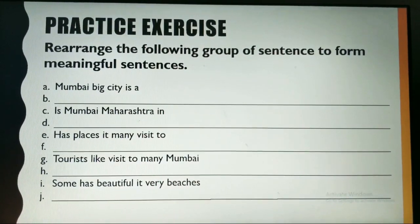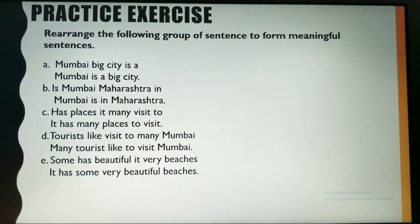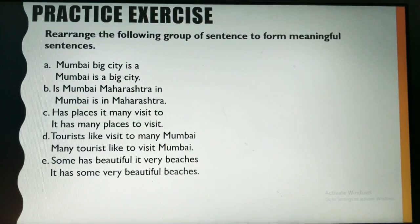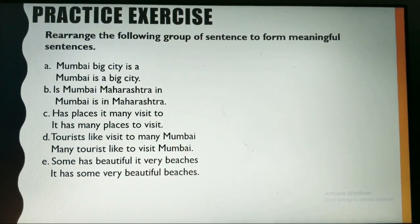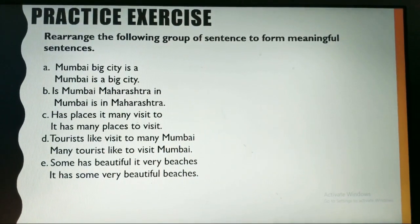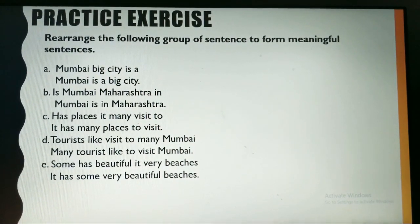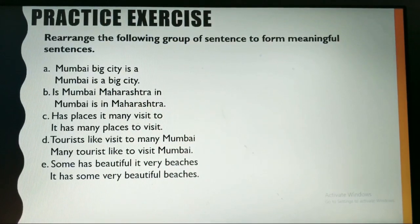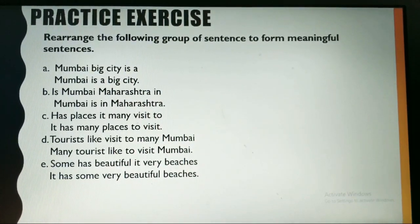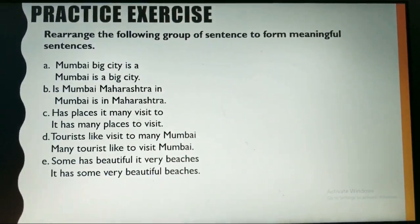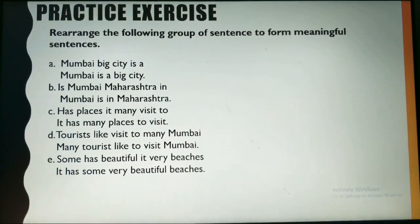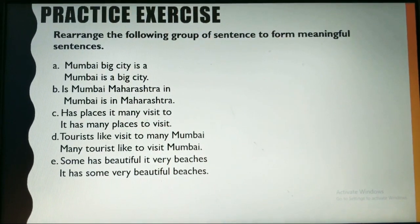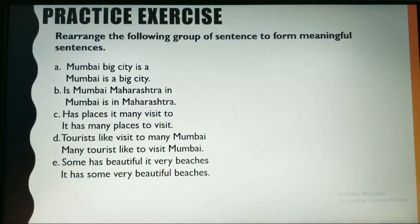Look at the slide carefully. 'Mumbai, big city is' is not the right sentence, so rearranging the words gives us: 'Mumbai is a big city.' Starting with a capital letter — Mumbai is a noun, so we write it with a capital letter — and ending the sentence with a full stop.